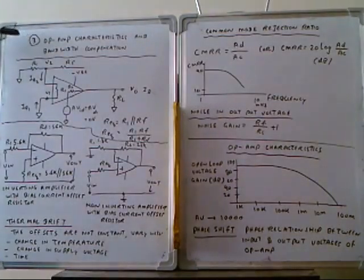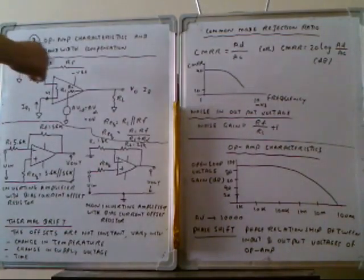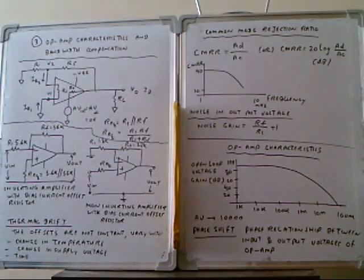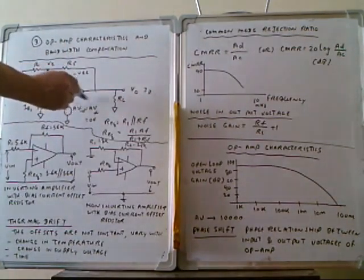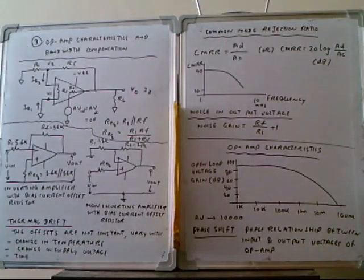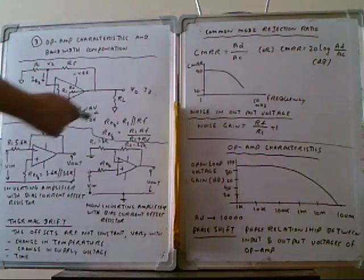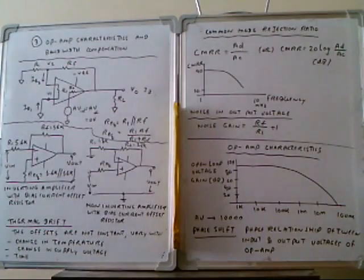Today's topic is the operational amplifier and bandwidth compensation. We are looking at the op-amp circuit supplied with resistors R1, Rf, Rx, and a forward resistor. These are used for the input, multiplying the voltage gain to give the output. The equivalent resistance of the system can be calculated as R1 in parallel with Rx, giving the equivalent resistor for the circuit.